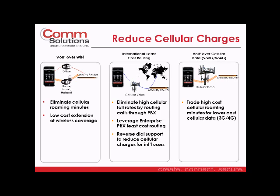How can we reduce cellular charges? We're going to do VoIP over Wi-Fi — using your internal Wi-Fi network to route calls as VoIP calls through your internal PBX system over low-cost PRI circuits, essentially eliminating or lowering the cellular minutes needed on corporate devices. International roaming charges are huge. If you have international offices and travelers, those cellular toll rates are enormous. We can route those calls over a Wi-Fi connection through the corporate PBX, leveraging toll bypass across different country offices, or use a cellular data plan to do VoIP calls rather than paying high-cost cellular minutes.